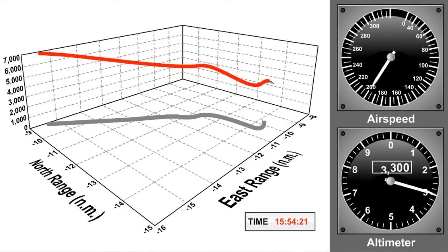Bank angle continued to increase, and pitch attitude also decreased until reaching 50 degrees nose-down. The airplane struck the ground in a steep, nose-down attitude in a rural area about 19 nautical miles southwest of the Detroit airport.